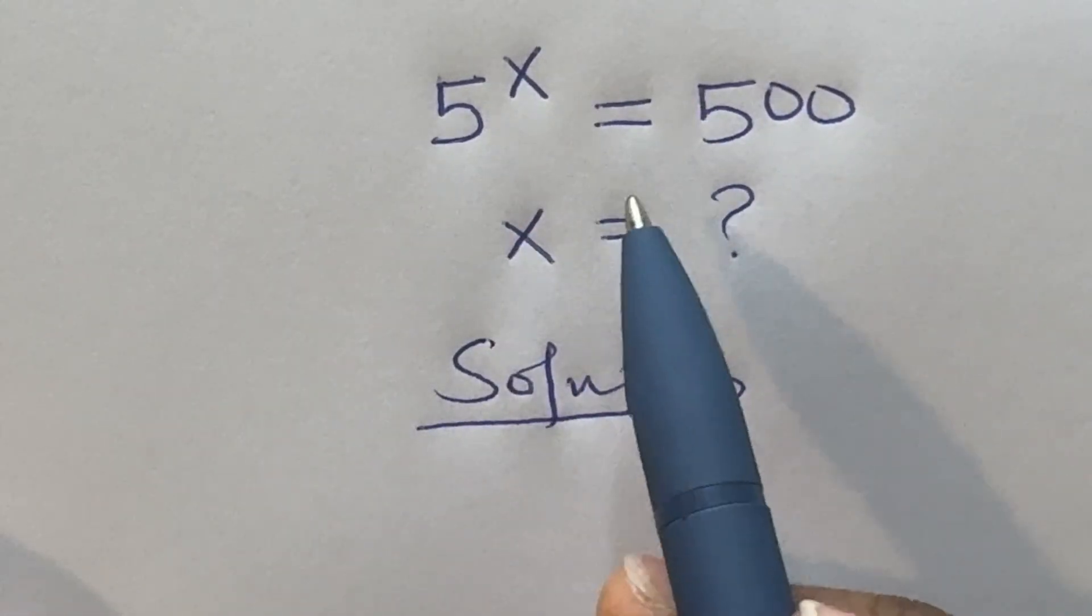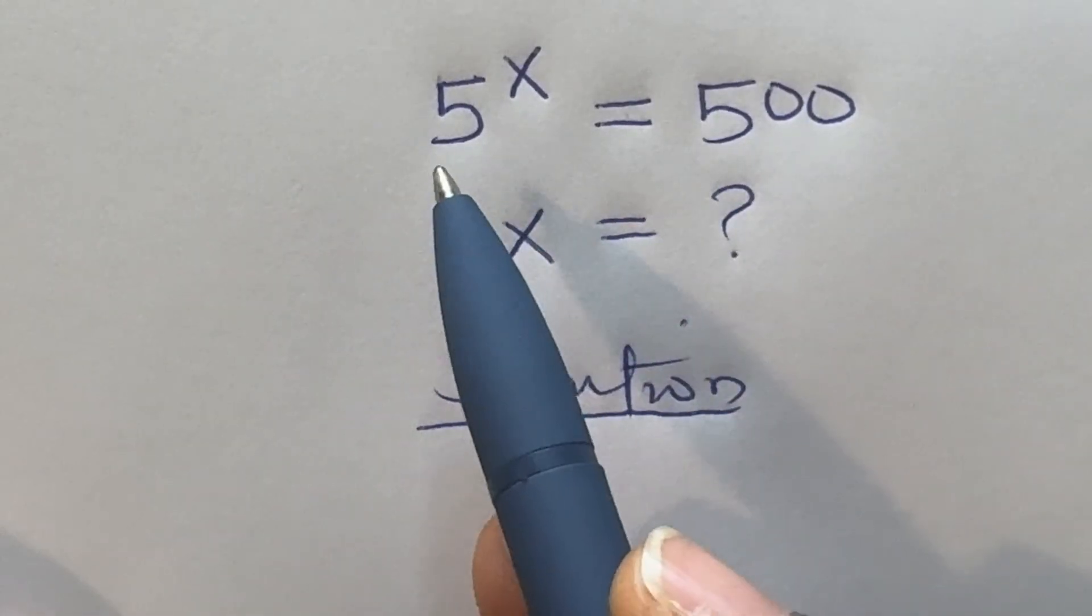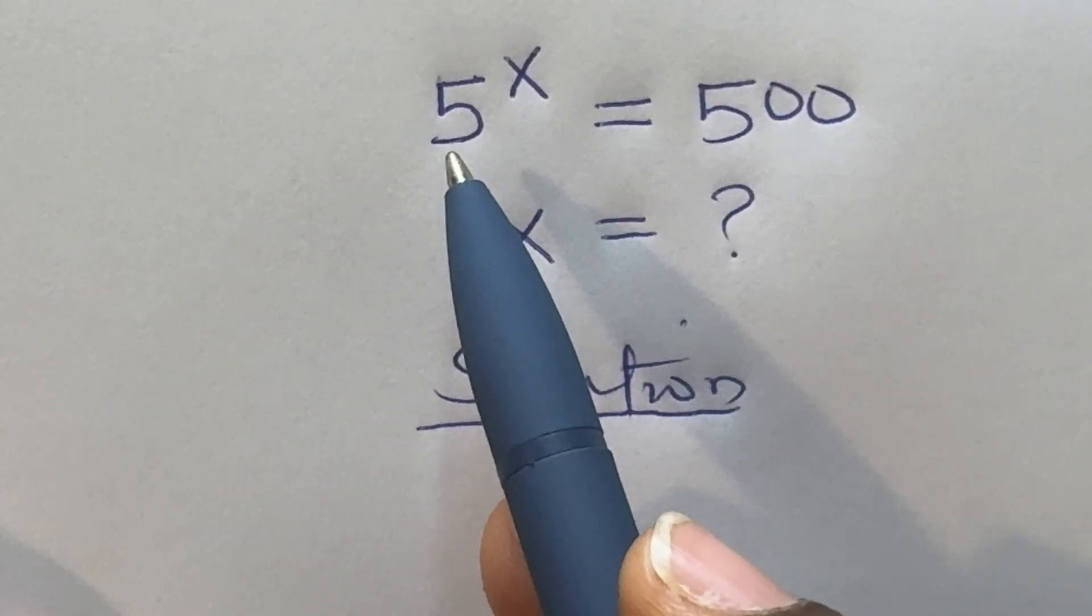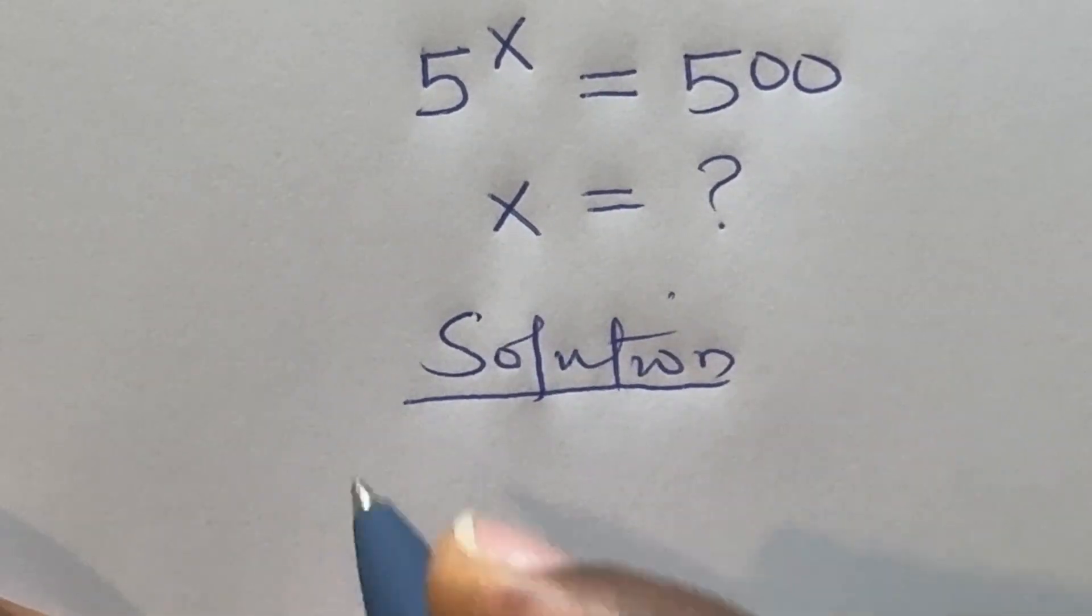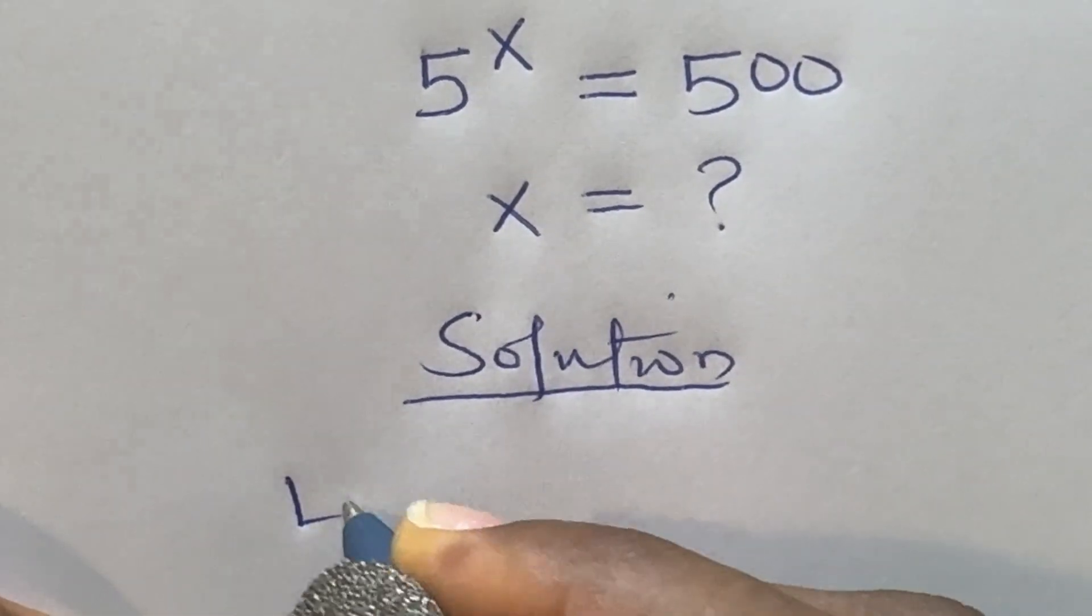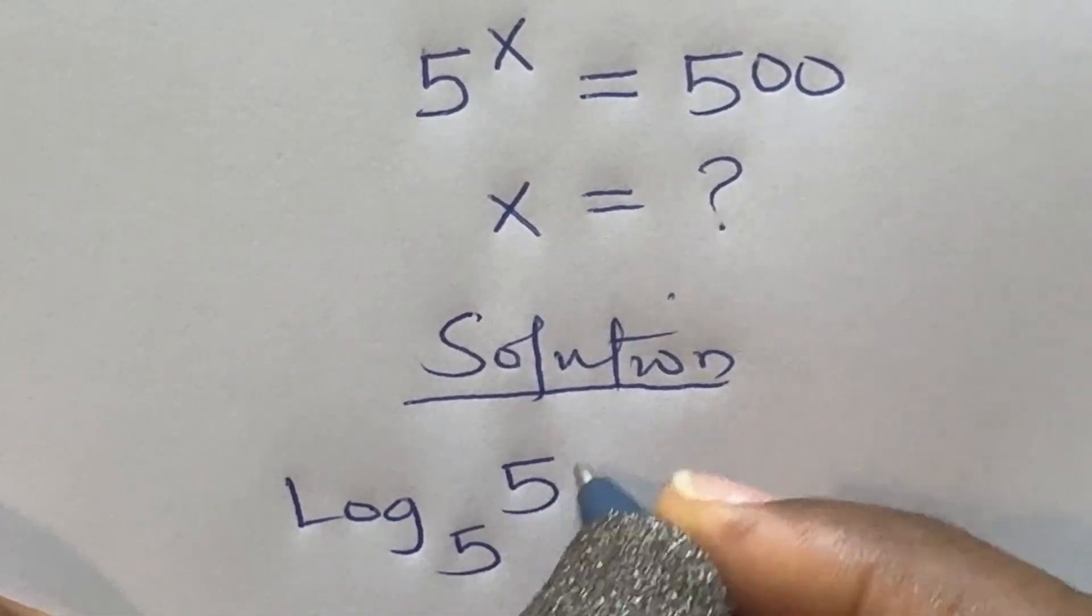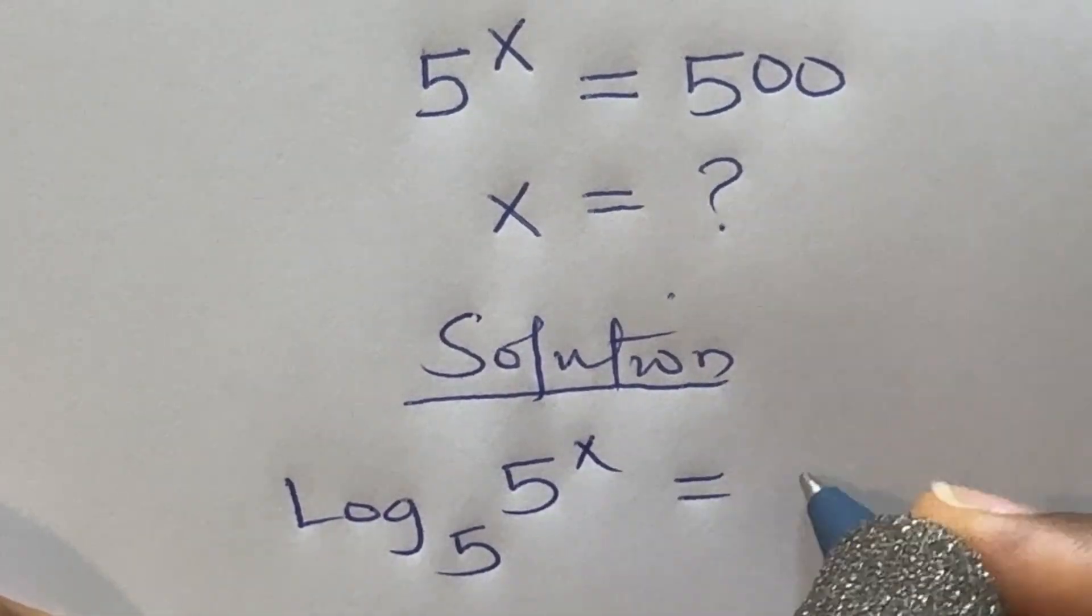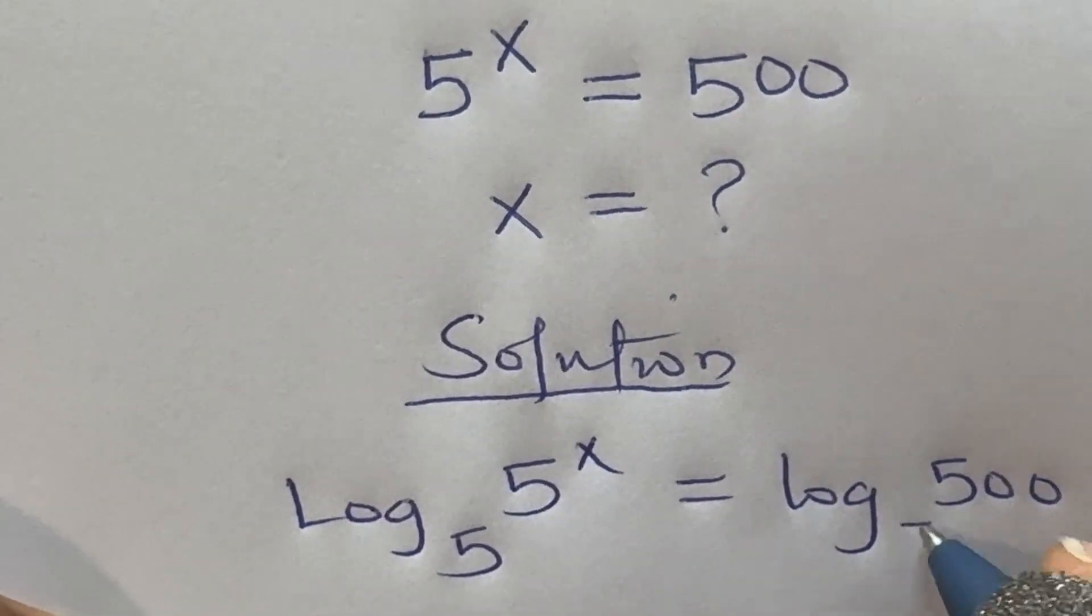To solve this we can approach this in at least two different ways, but I'm going to take the logarithm of both sides to base 5, so that log to base 5 of 5 raised to power x is equal to log 500 to base 5.